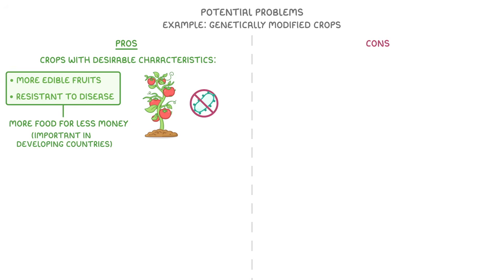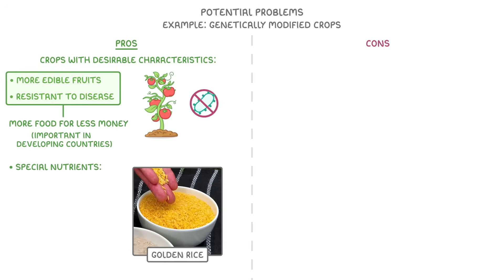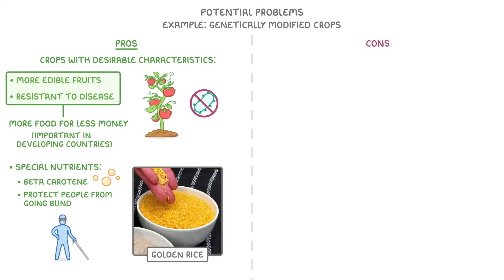We can also make sure that plants produce special nutrients. For example, Golden Rice contains beta-carotene, which can protect people from going blind.